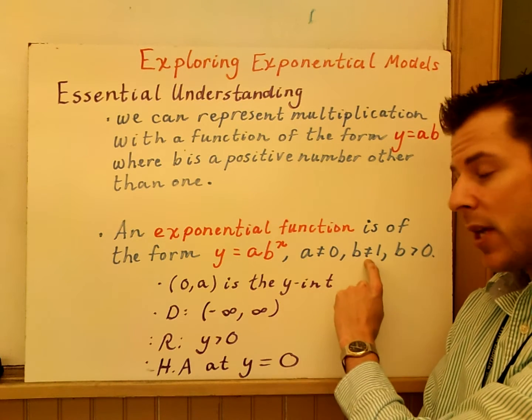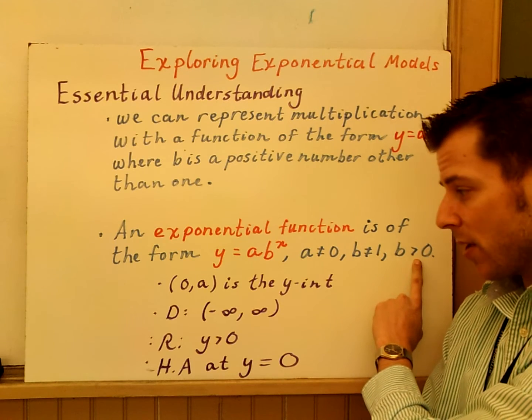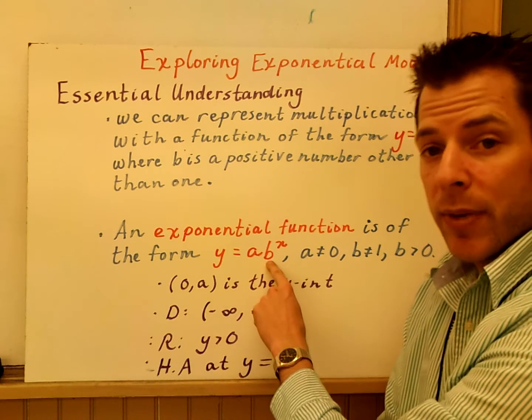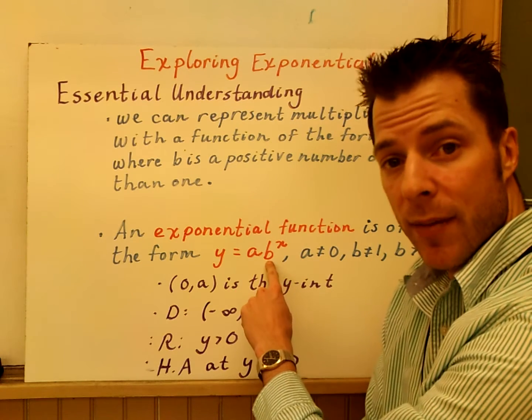a can't be 0, b can't be 1, and b also has to be greater than 0. So in order for this to be exponential, a can't be 0, b has to be greater than 0, but b can't be 1.